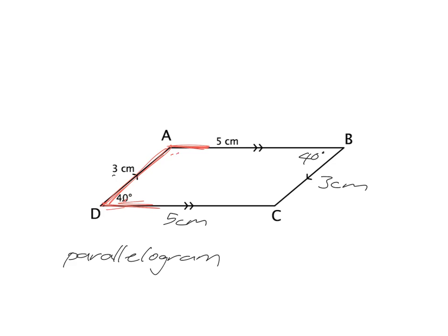We can use our knowledge of parallel lines to work out the remaining angle. With a parallel line, another parallel line, and a transversal cutting through, we're dealing with co-interior angles, which add up to 180°. So the angle must be 140°, because 140 + 40 = 180. Then, by the parallelogram property that opposite angles are equal, the final angle is also 140°.